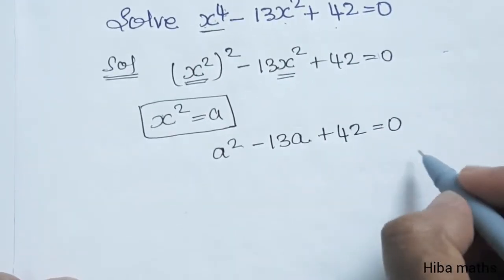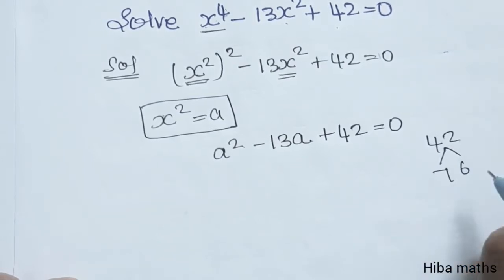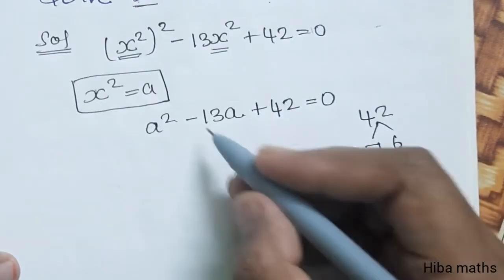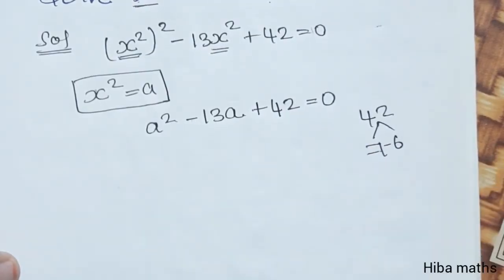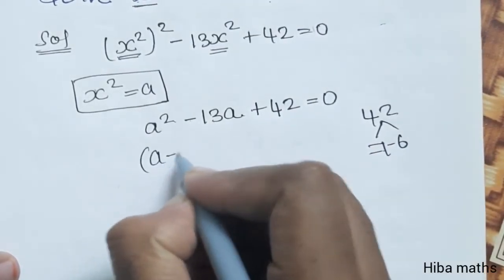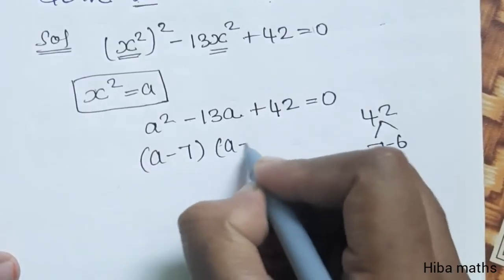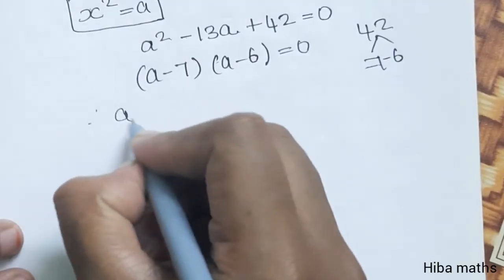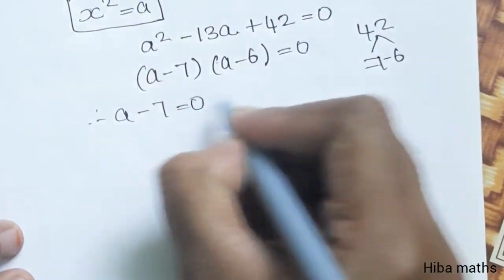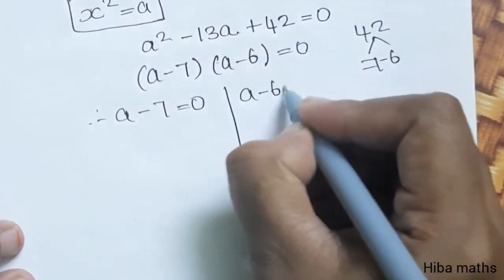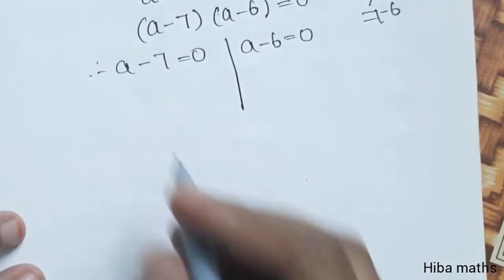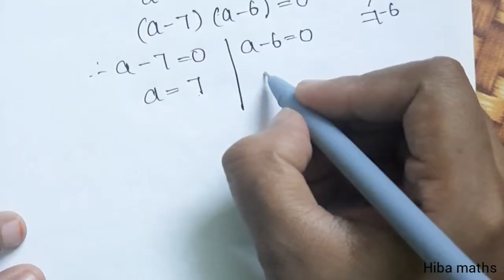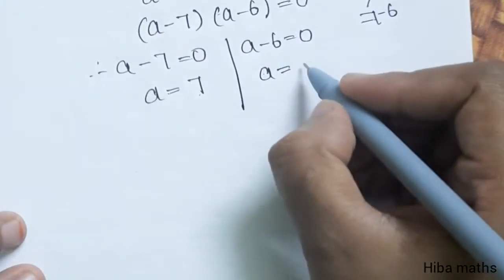Now split 42: 7 and 6 give 42, and 6 plus 7 is 13. Since we have two minus signs, the answer directly is: a minus 7 and a minus 6 equal to 0. Therefore, a minus 7 equals 0 and a minus 6 equals 0, giving a equals 7 and a equals 6.